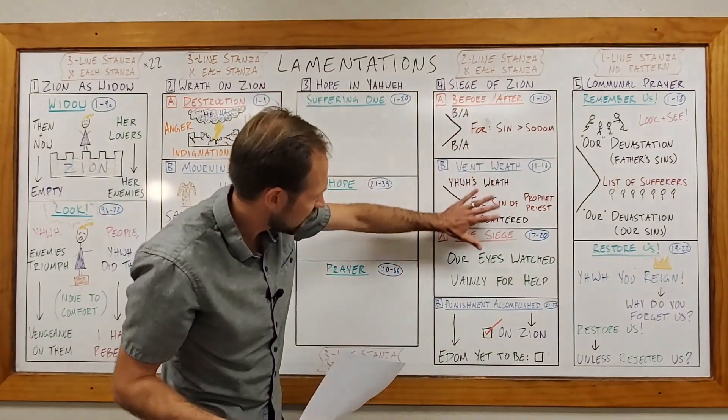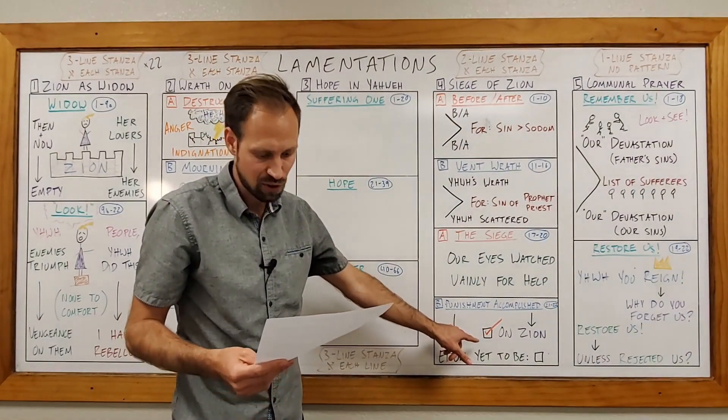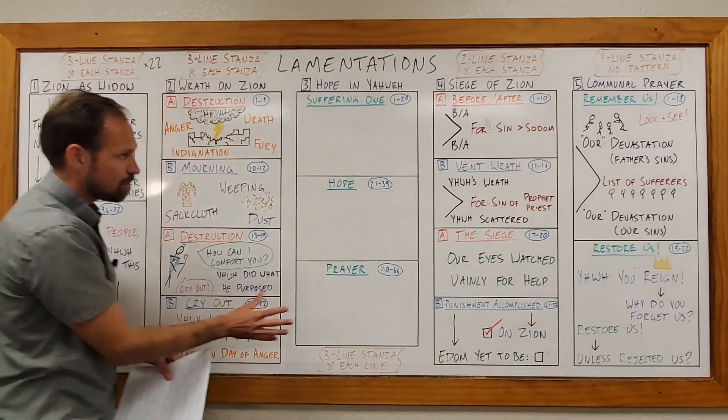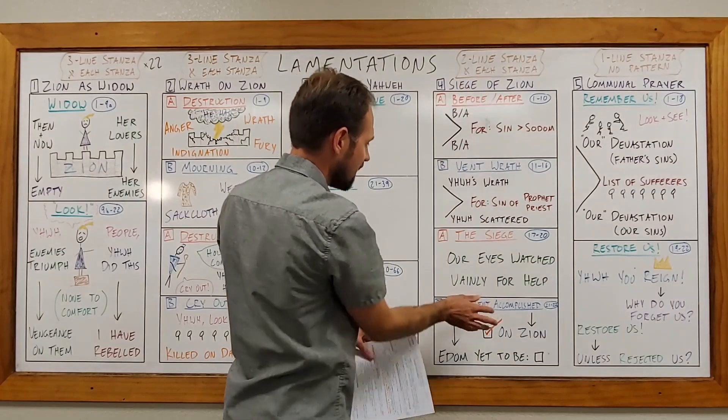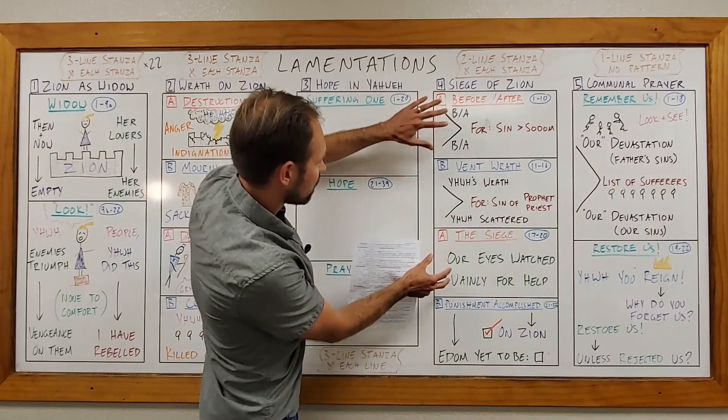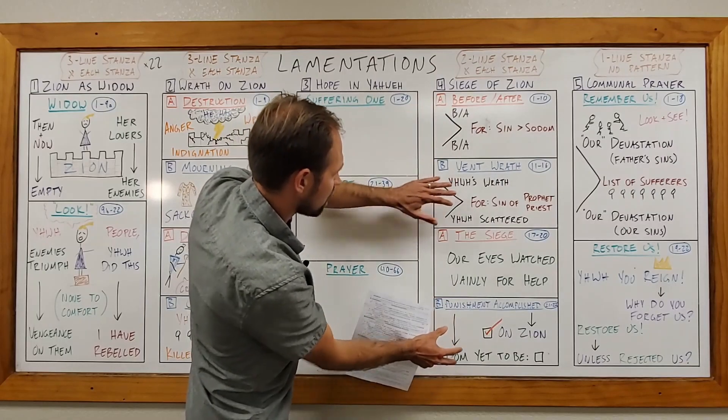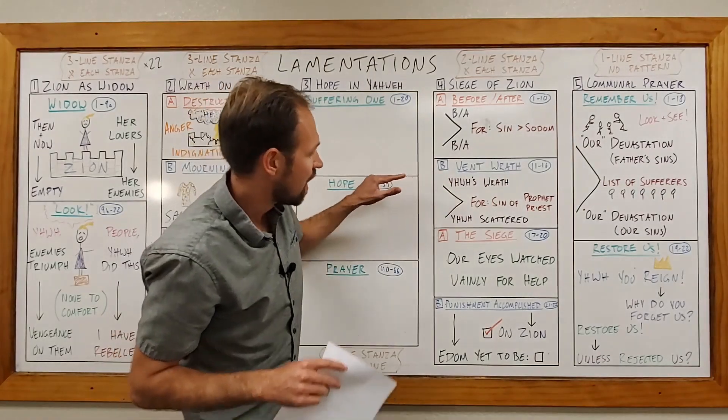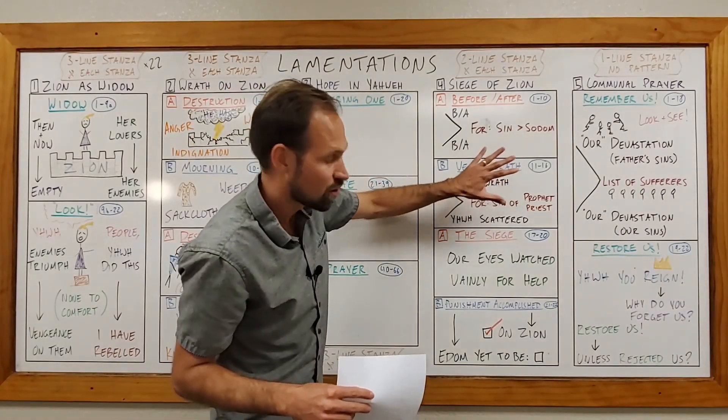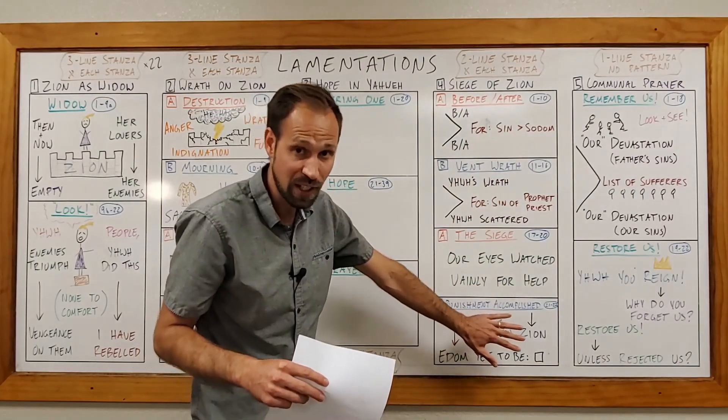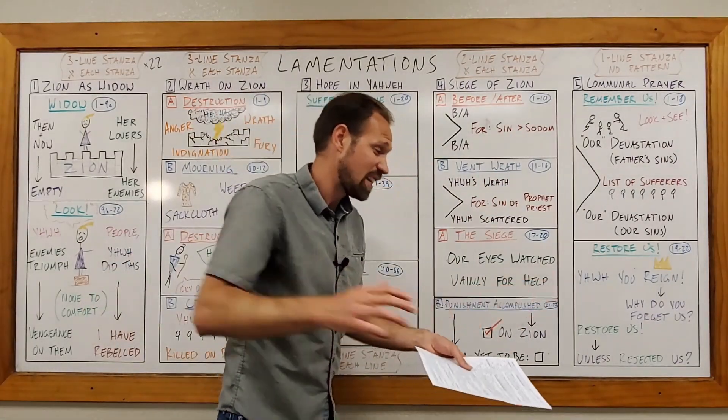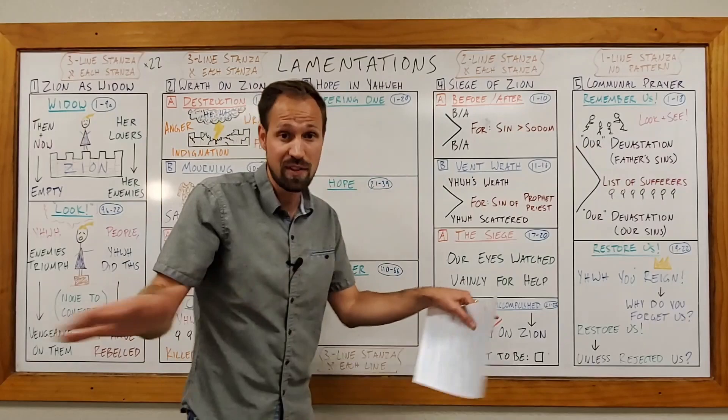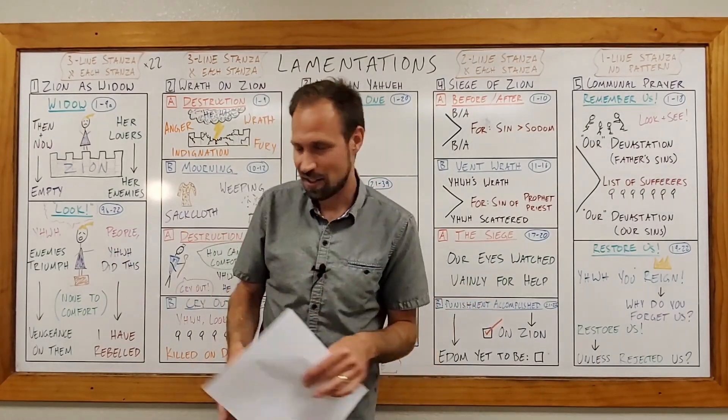Now, poem 4 is going to finish with a fascinating verse in verse 22. But just like in chapter 2, which has an A-B-A-B pattern, the same is true in chapter 4. A-B-A-B. A is going to focus on the siege of Zion, and B is going to focus on the wrath of God. In this initial section, we saw that Yahweh gave full vent to his wrath. And then here in 21 and 22, it's going to say that Yahweh has completely emptied out his wrath. He's poured out the cup. It is completely dry now. It is finished. He is done.